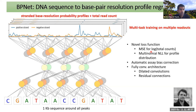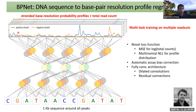Most of the innovation is in the loss function. The key insight is to design your loss function for the nature of the noise in your data. We are modeling counts — read counts falling on sequences. We want to predict both the total number of reads (e.g., 400 reads on a 1000 bp region) and how those 400 reads are precisely distributed across each of the 1000 base pairs. These are two separate prediction tasks.